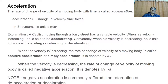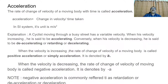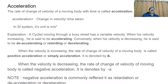The next concept is acceleration. Generally when travelling on a road, velocity changes. For example, when travelling on a bicycle on an uneven road, when the road is clear we speed up, and when it is not clear we slow down. So we always change the velocity. The rate of change of velocity of a moving body with time is called acceleration. Acceleration equals change in velocity divided by time taken.